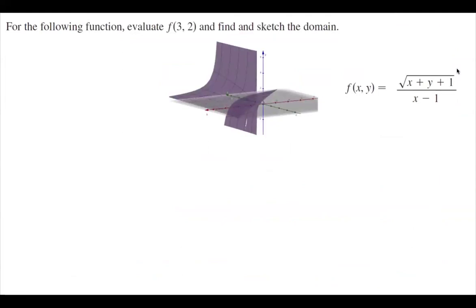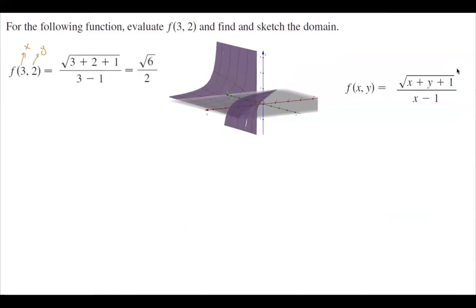What is the domain? How do you sketch the domain? First of all, let's calculate f of 3 and 2. It means that wherever you see x, you're going to use 3, and wherever you see y, you're going to substitute that by 2. This is basically the square root of 3 plus 2 plus 1 divided by 3 minus 1, which is the square root of 6 over 2. So the point (3, 2, √6/2) is on the graph of this function.